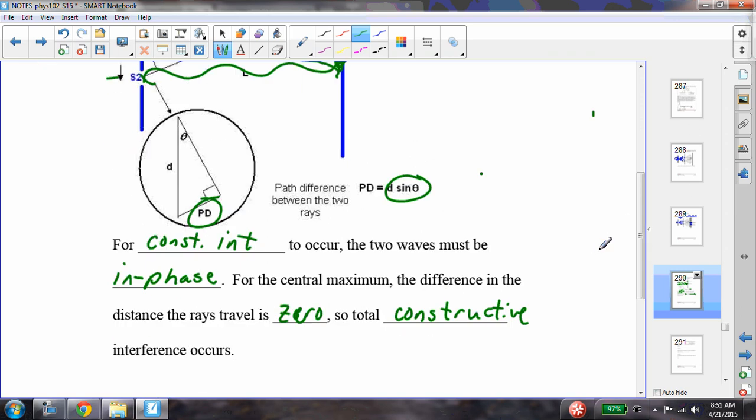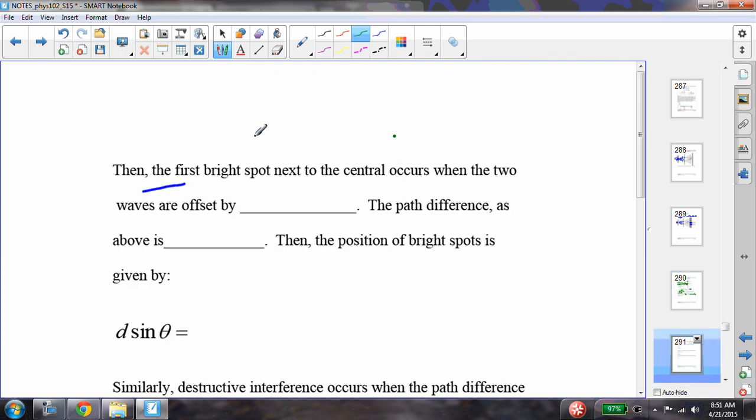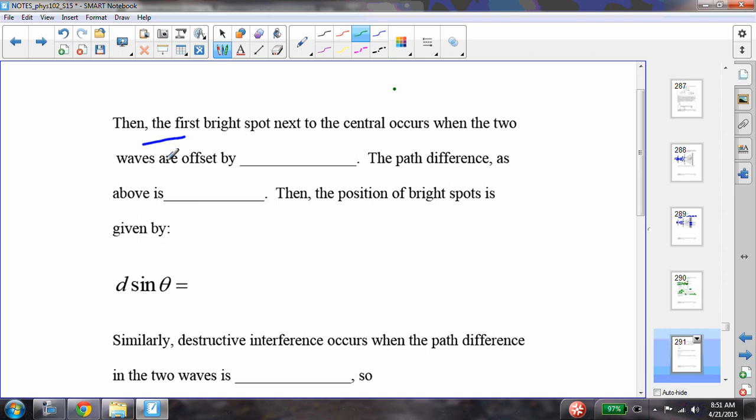Now, similarly, then the first bright spot next to the central occurs when the two waves are offset by one wavelength. Remember, that's still constructive interference as well. If I just offset the wave length by one wavelength, I still get constructive interference. The path difference, as we saw above, is equal to d sine theta. And then we can develop this expression for the position of the bright spots.